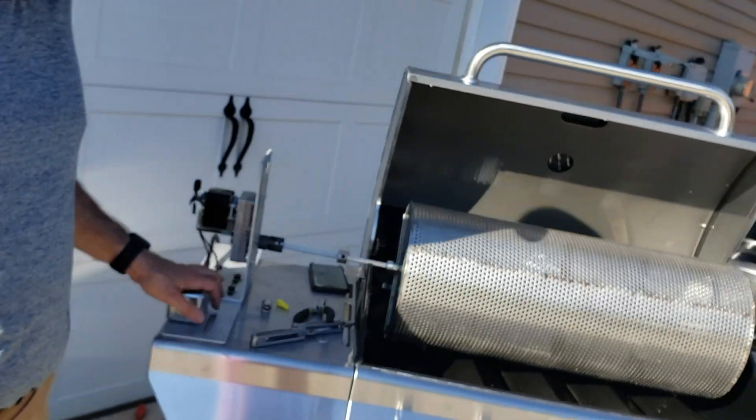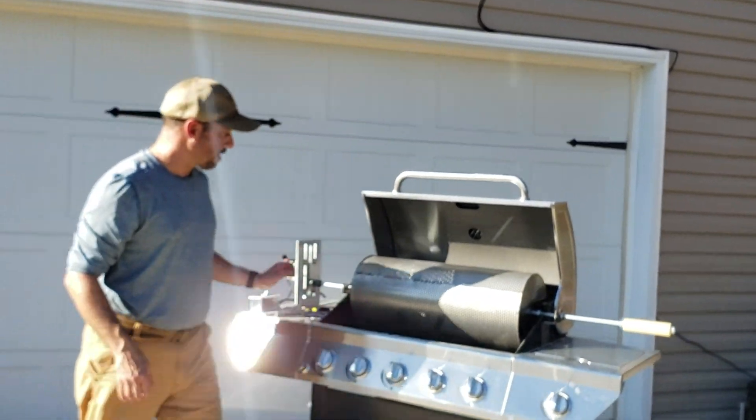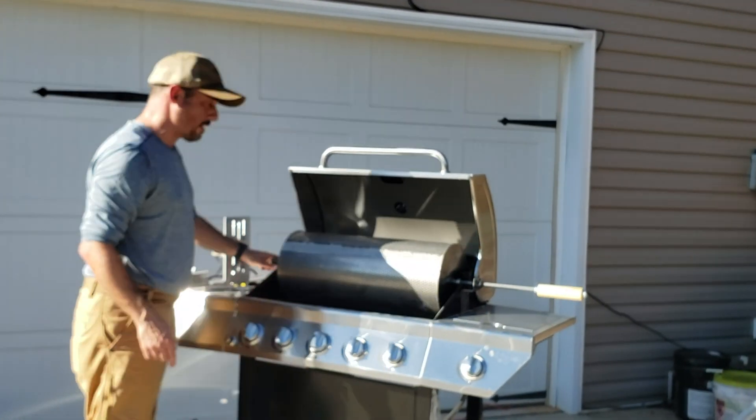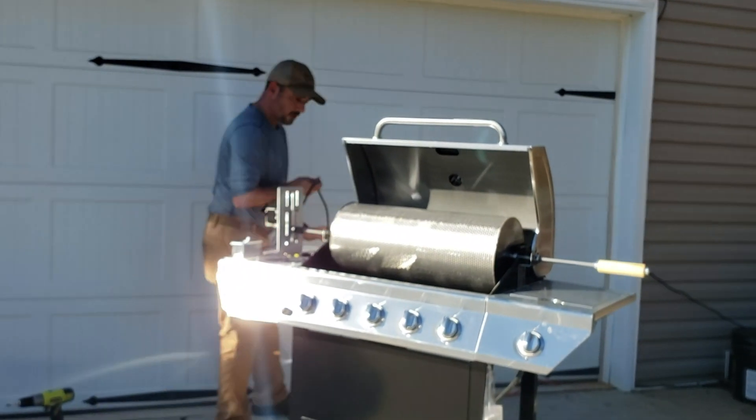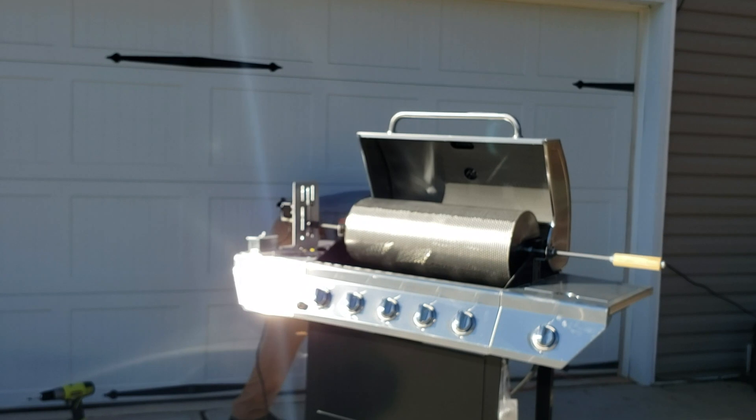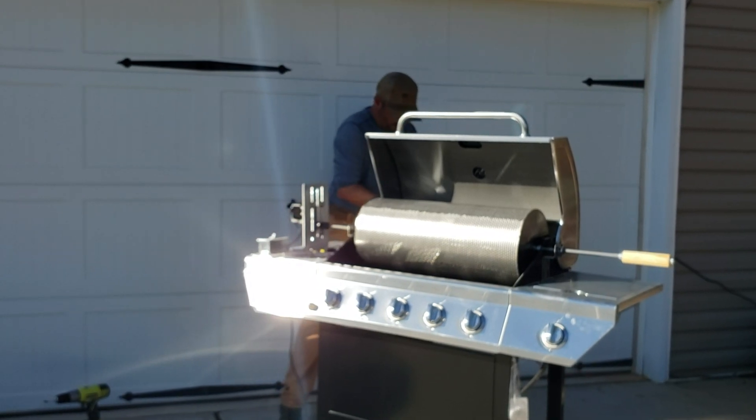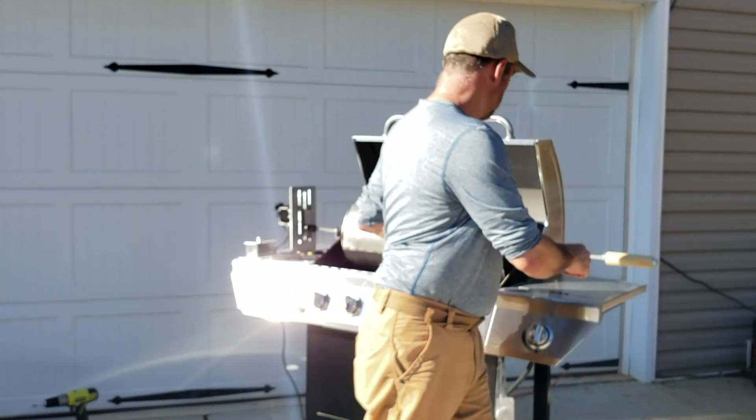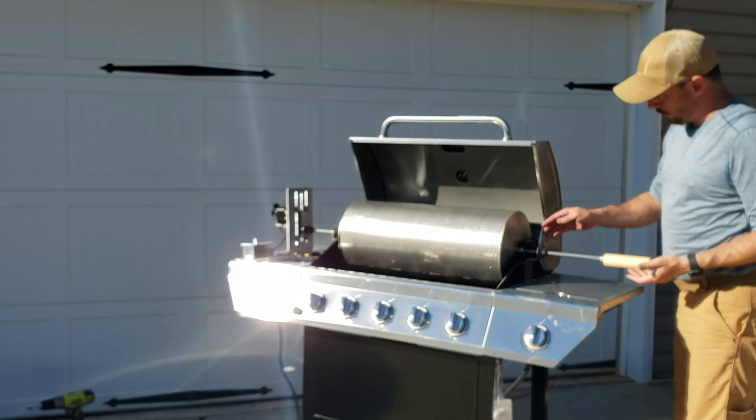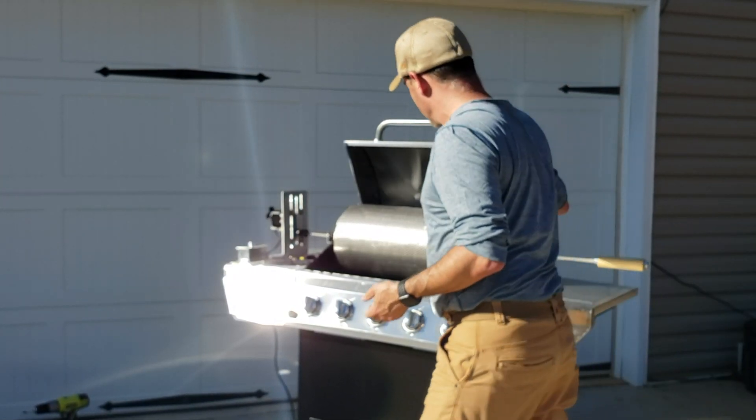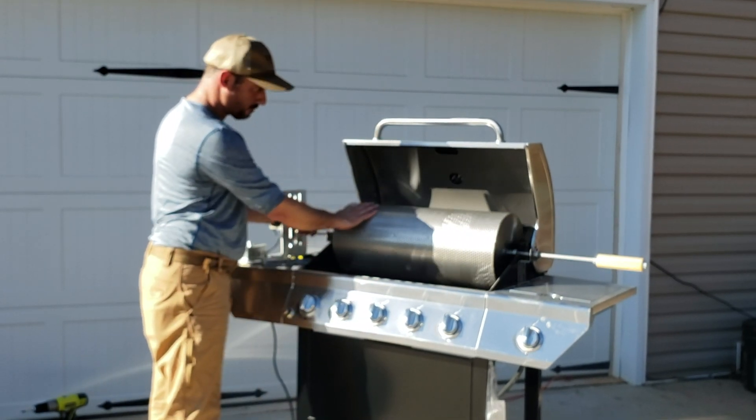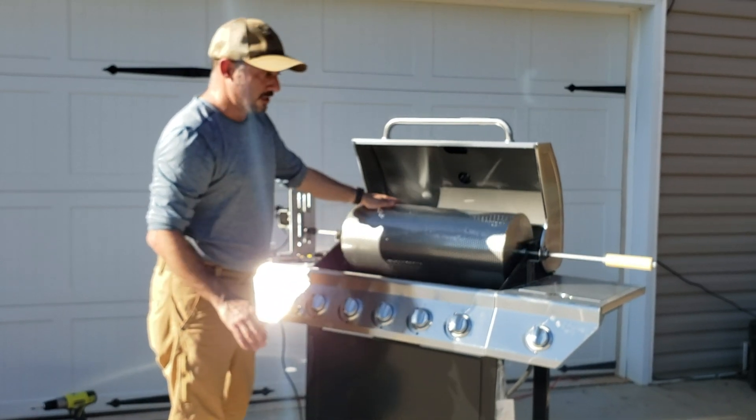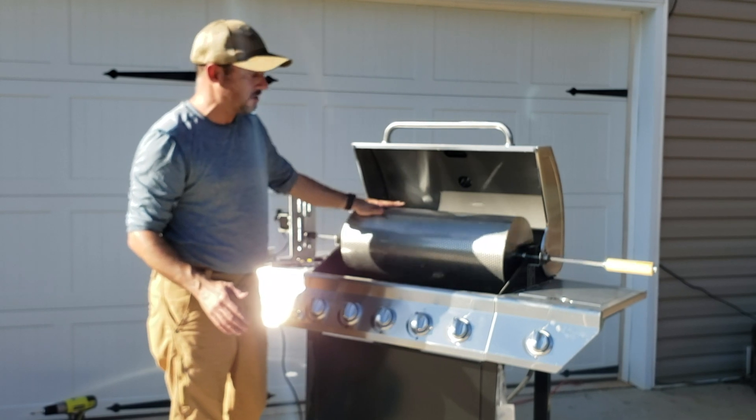So at this point, we are done with our conventional roaster build. You might want to put a little bit of oil on these bearings as you break things in. But we'll do a quick test here. Make sure everything works. Flip the switch. There we go. So we have a nice smooth action over here. Nice smooth action over here. Drum rotates nice and smooth with nothing hitting. And so at this point, we're ready to do a run-up test and fire.